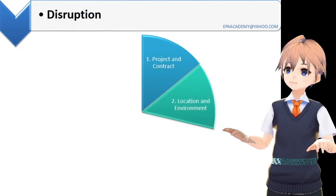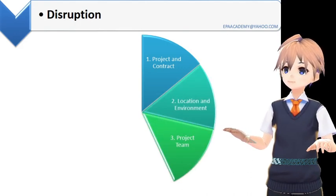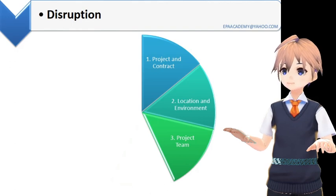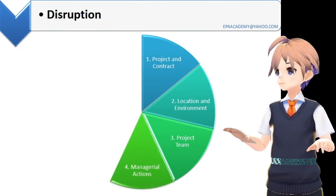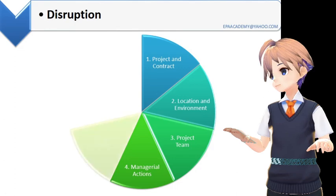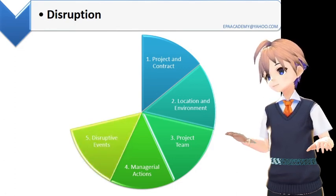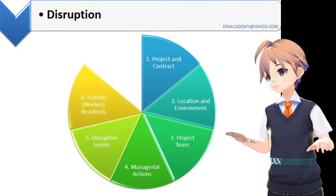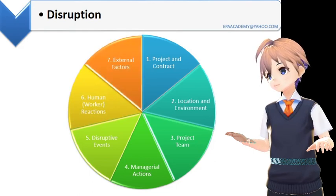The remaining categories include: project team — owner, contractor, and architect; managerial actions and decisions during project execution; disruptive events and signs on sites; human and worker reactions; and external factors.